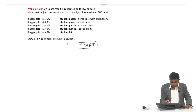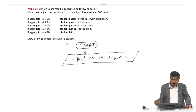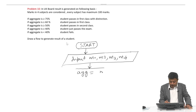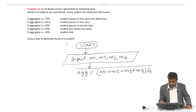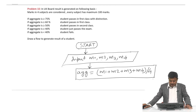We have to generate a result for a single student. First I need to input marks in 4 subjects — I will write input m1, m2, m3, and m4 for marks in subjects 1 through 4. Once I have the marks, I need to find the aggregate: aggregate equals m1 plus m2 plus m3 plus m4, divided by 4. Maximum marks are 400 divided by 4 equals 100, so whatever aggregate I get will be in percentage.